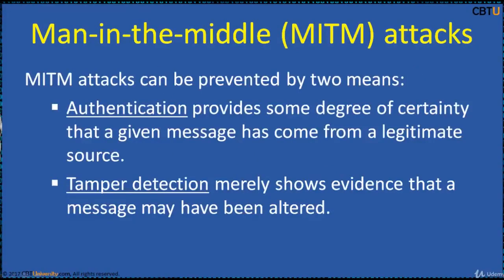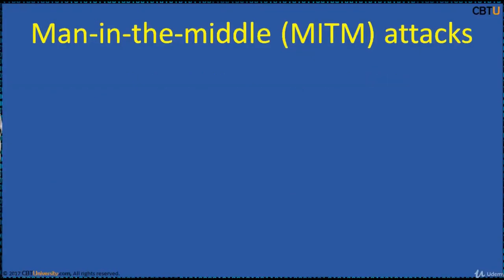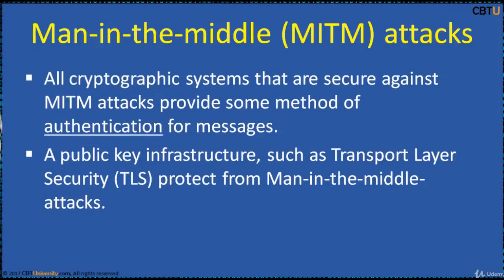Man-in-the-middle attacks can be prevented by two means: authentication and tamper detection. Authentication provides some degree of certainty that a given message has come from a legitimate source. Tamper detection merely shows evidence that a message may have been altered. All cryptographic systems that are secure against MITM attacks provide some method of authentication for the messages.